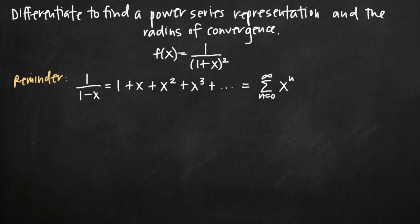Today we're going to be talking about how to use differentiation to find a power series representation of a given function and its associated radius of convergence. In this particular problem we've been given the function f of x equals 1 divided by the quantity 1 plus x squared.